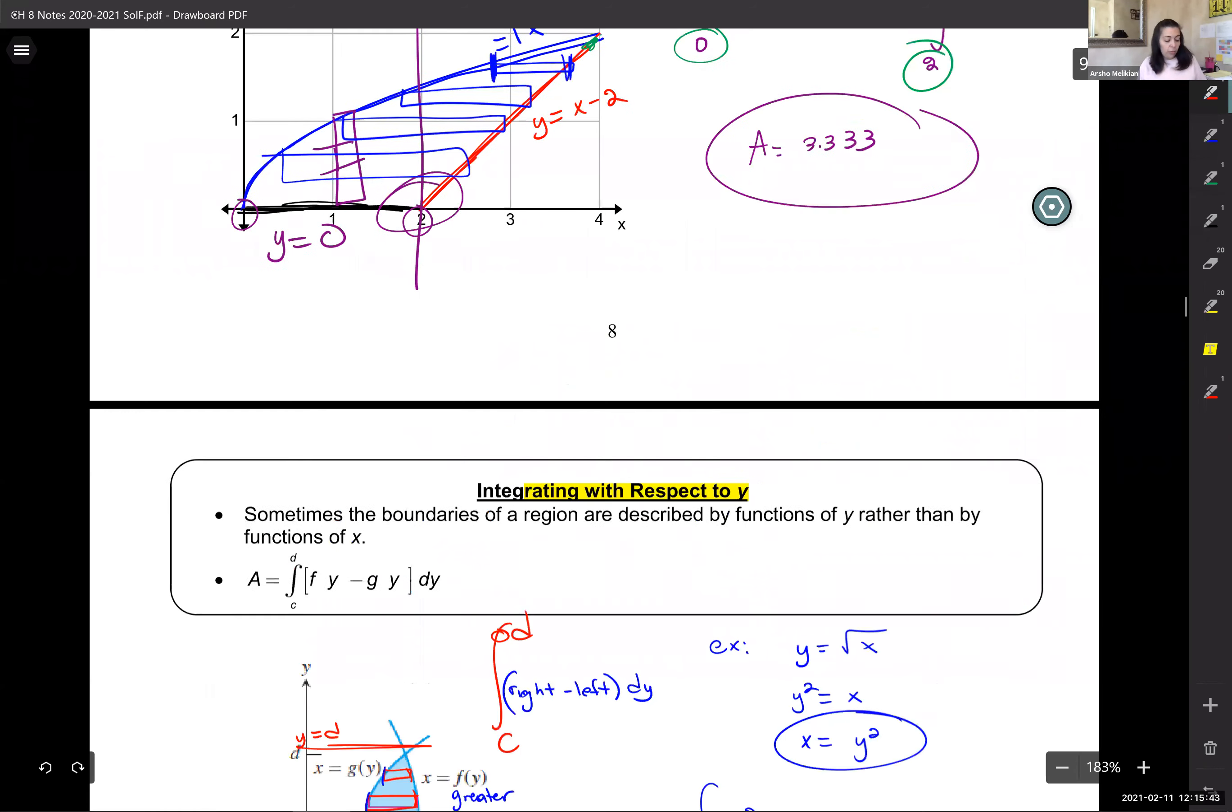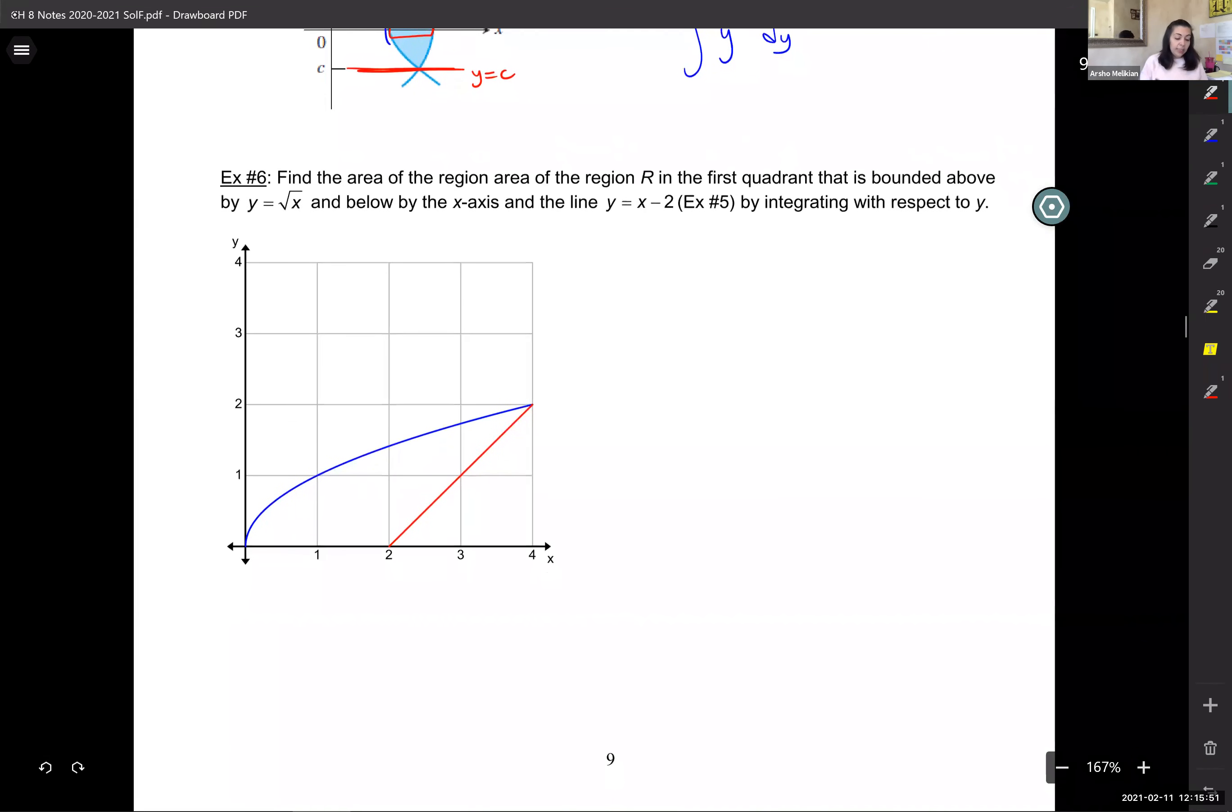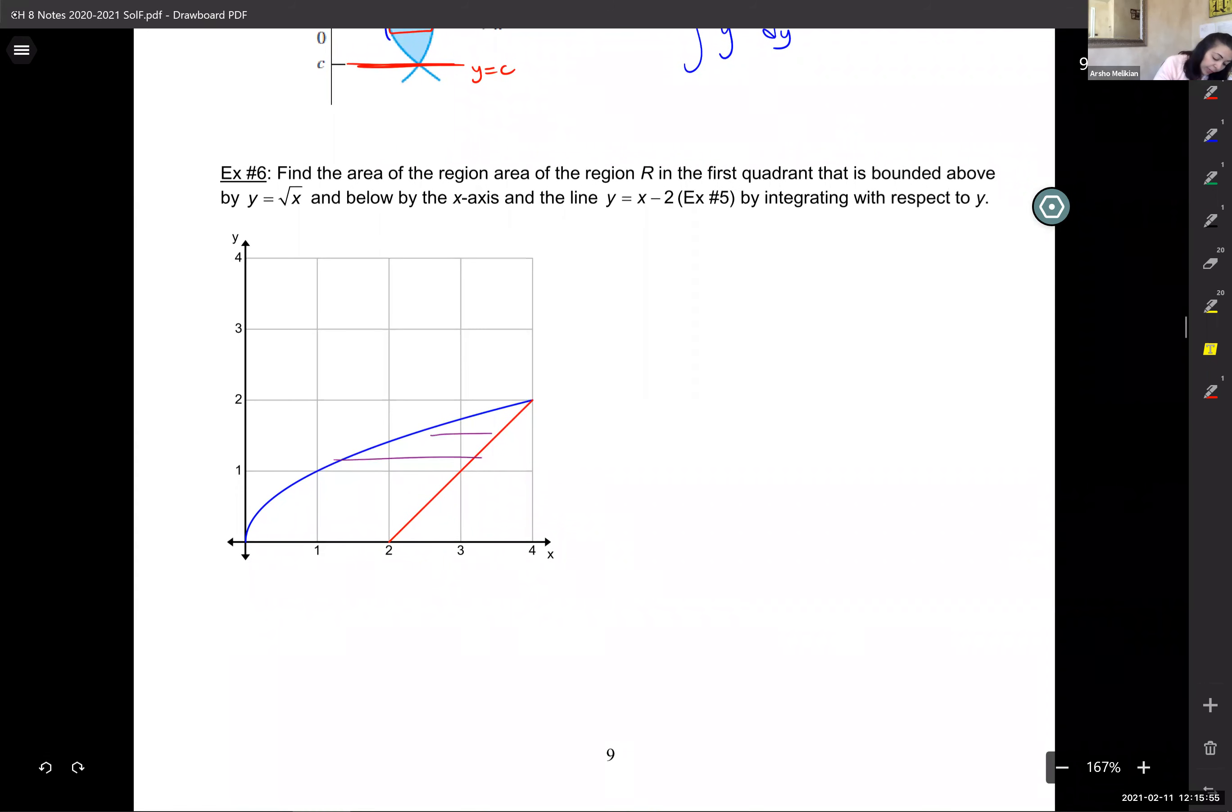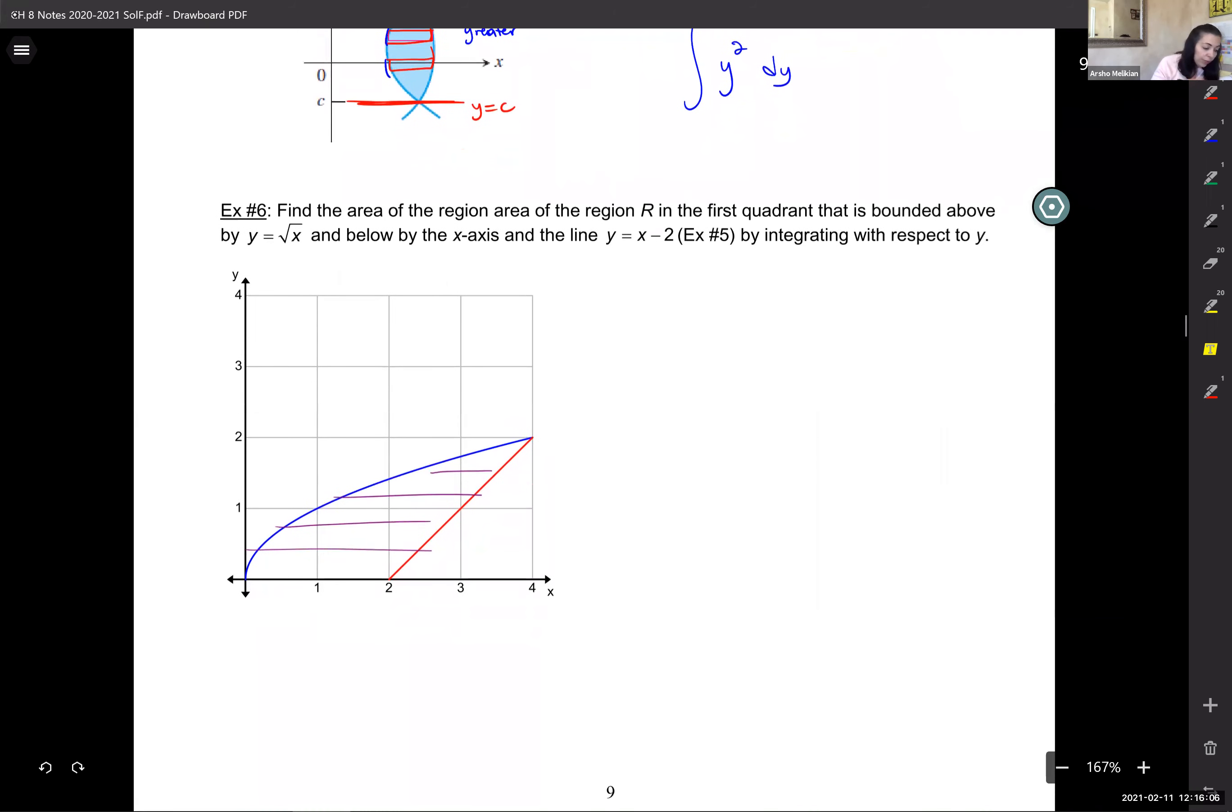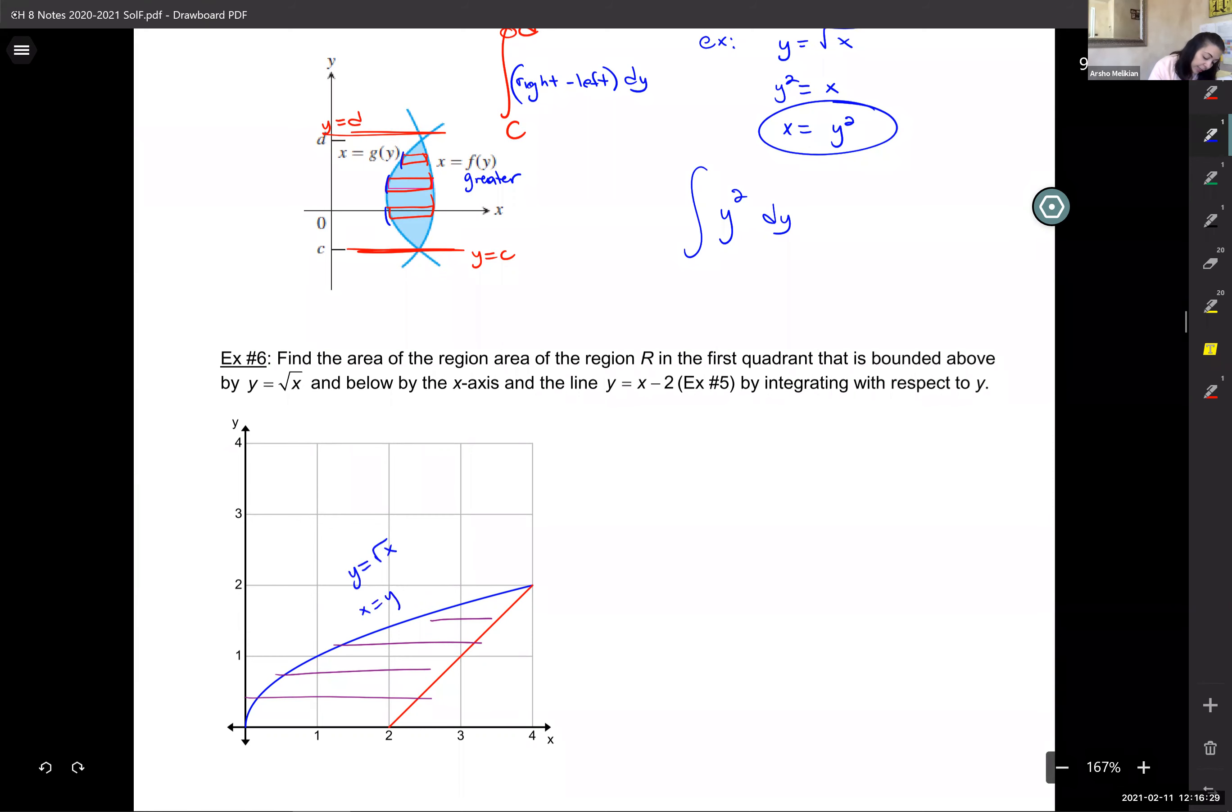So, what we're going to do now is, remember that problem that we did yesterday? We're going to do it again. But, this time, we're going to do it with respect to y, okay? Because, here, when I draw my rectangles this way, every single one of them have the same function on the left and the same function on the right. So, here's what we do. What were the functions here? My functions were y. So, look at what my functions are. Here, I have y equals root x. I solve that for x, and I get x equals y squared. Here, I have y equals x minus 2. So, x equals y plus 2.